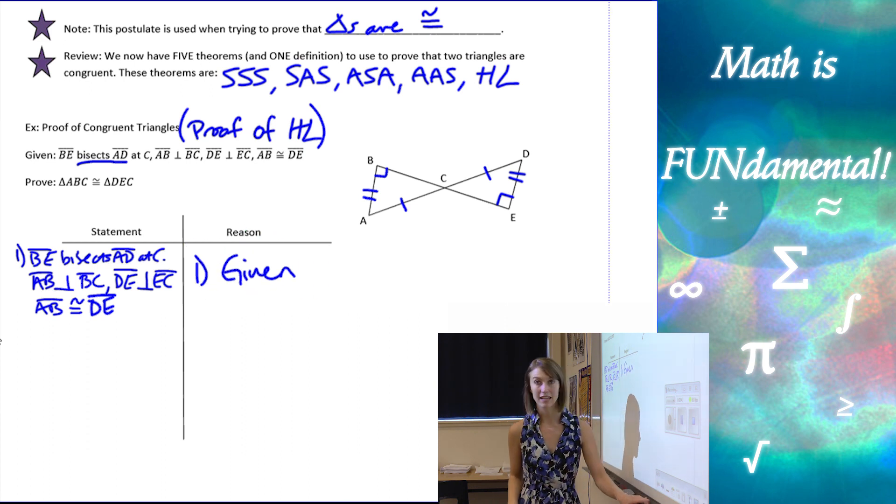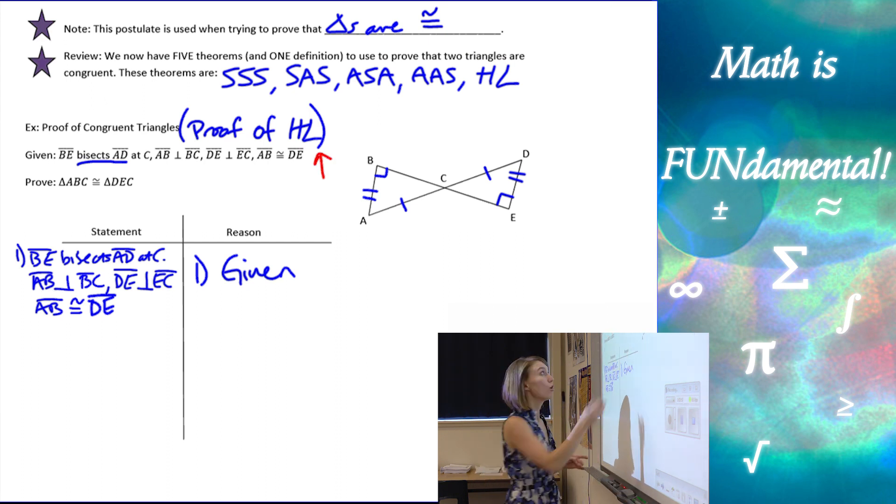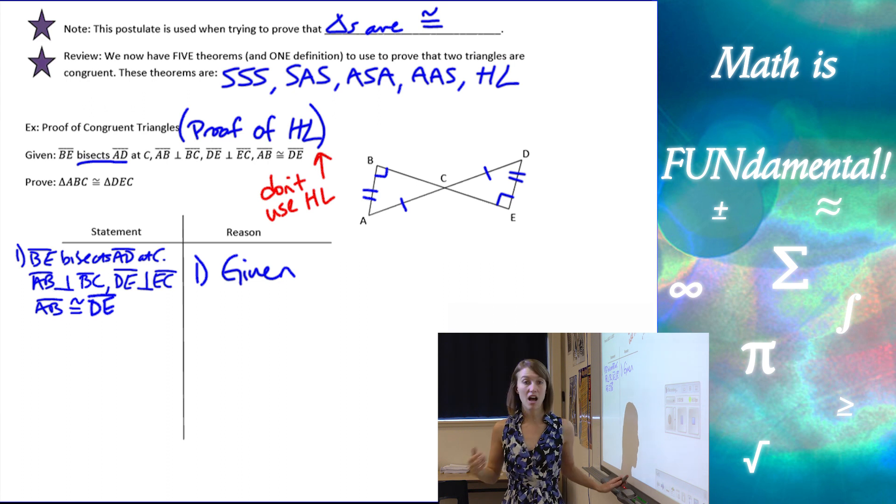Next, we have to think, and we don't want to use the HL theorem. When we're trying to prove that a theorem is true, we don't want to use, don't use HL. We want to use the other ones that we have to prove that HL really does work.